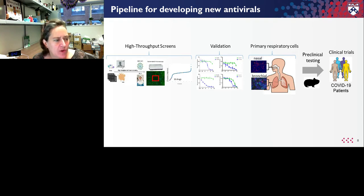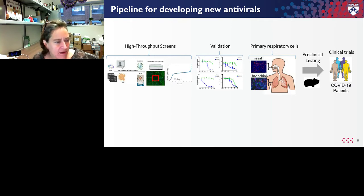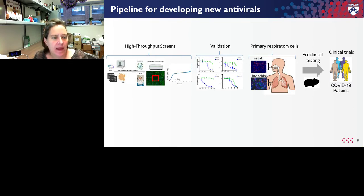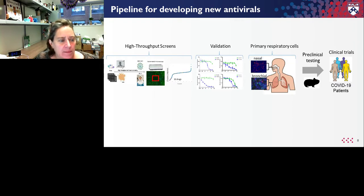The idea is to go from high-throughput screens where we can screen thousands of compounds, to validation mode where we do dose responses in a variety of cell types to determine antiviral activity and cytotoxicity. We then take our most potent and non-toxic hits and move them into primary respiratory cells. The virus is a respiratory pathogen and can infect both the nasal epithelium as well as the airways and bronchial epithelial cells. The goal is to take these candidates into preclinical testing — hamster and mouse models — to ultimately bring compounds to clinical trials.